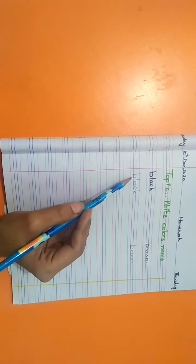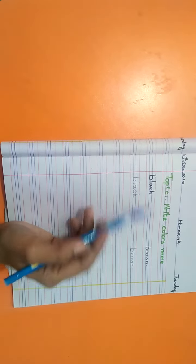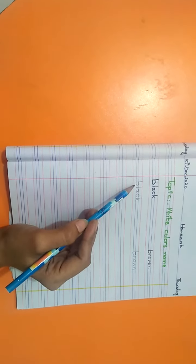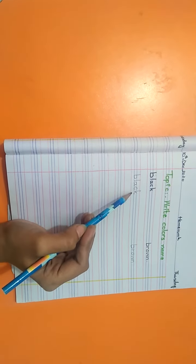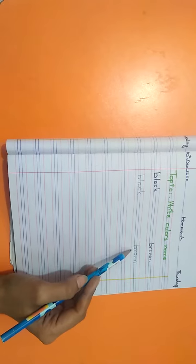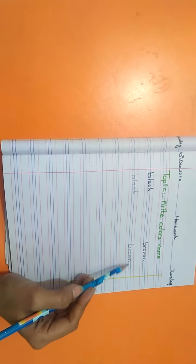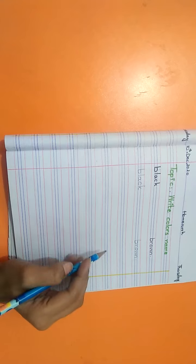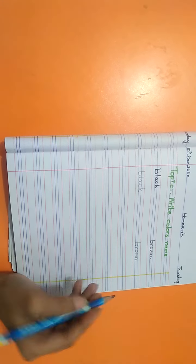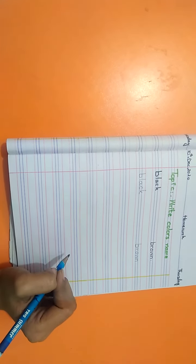Let's repeat again. Black. Brown. The spellings of black is B-L-A-C-K. Black. The other one B-R-O-W-N. Brown. Now student write on your notebook like this and learn it very well.